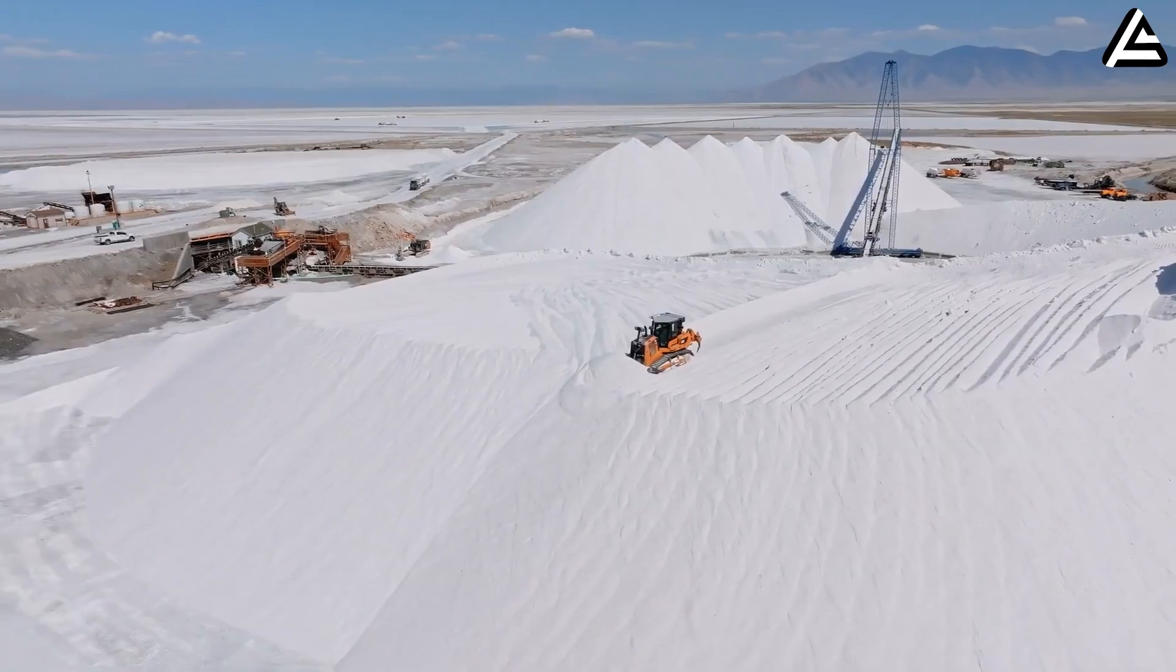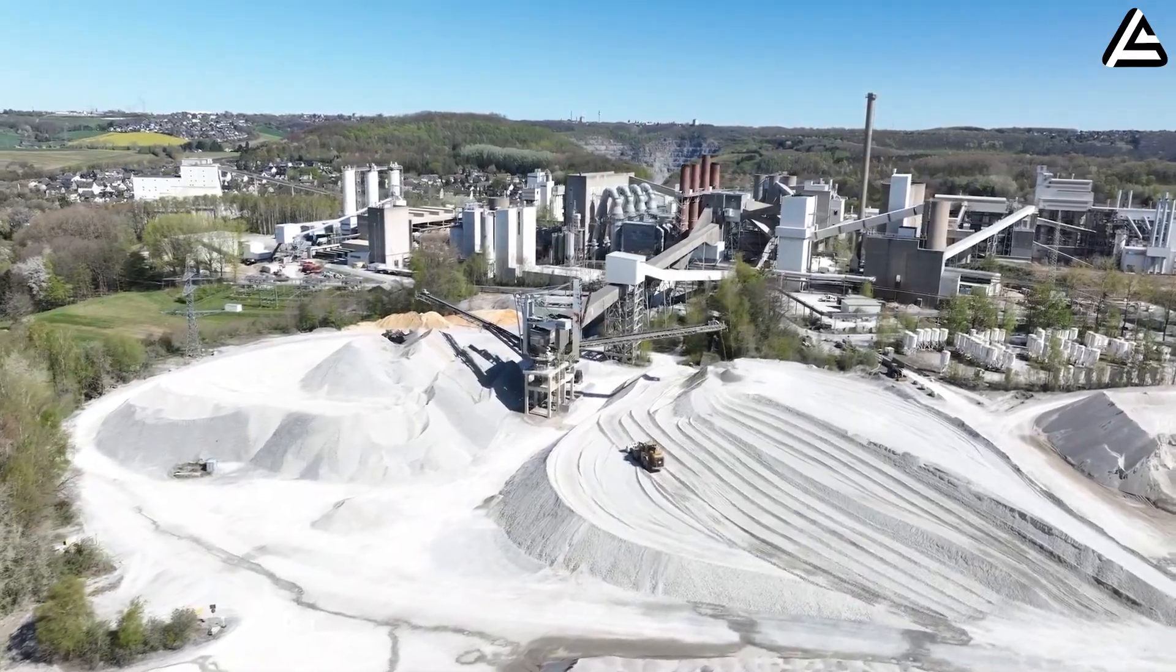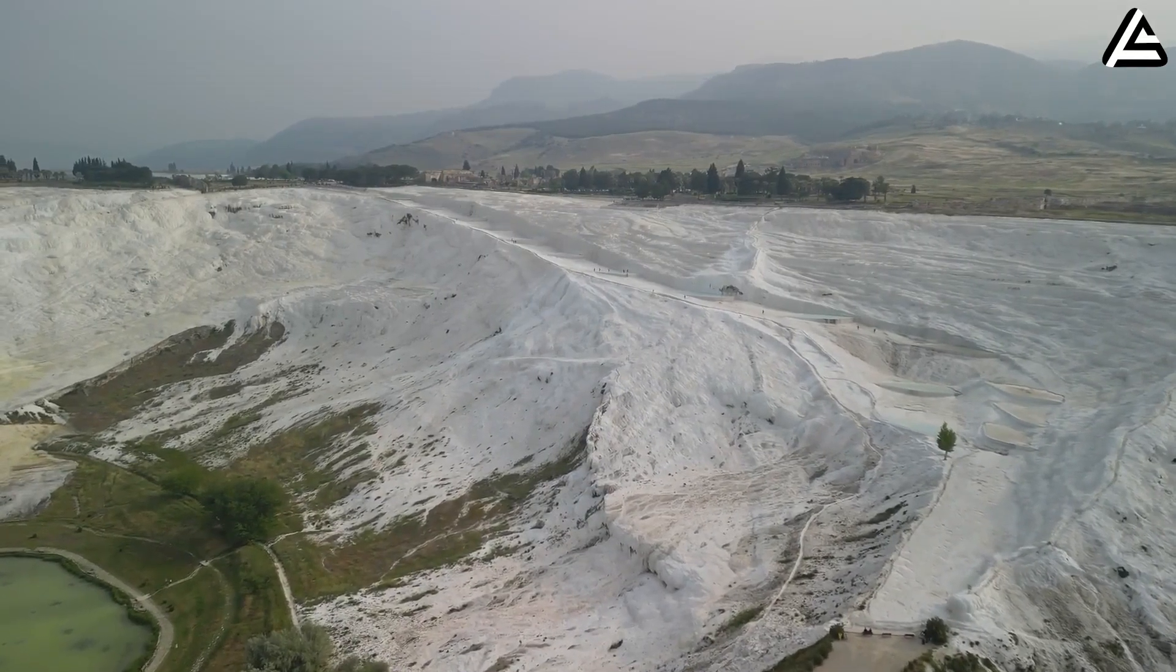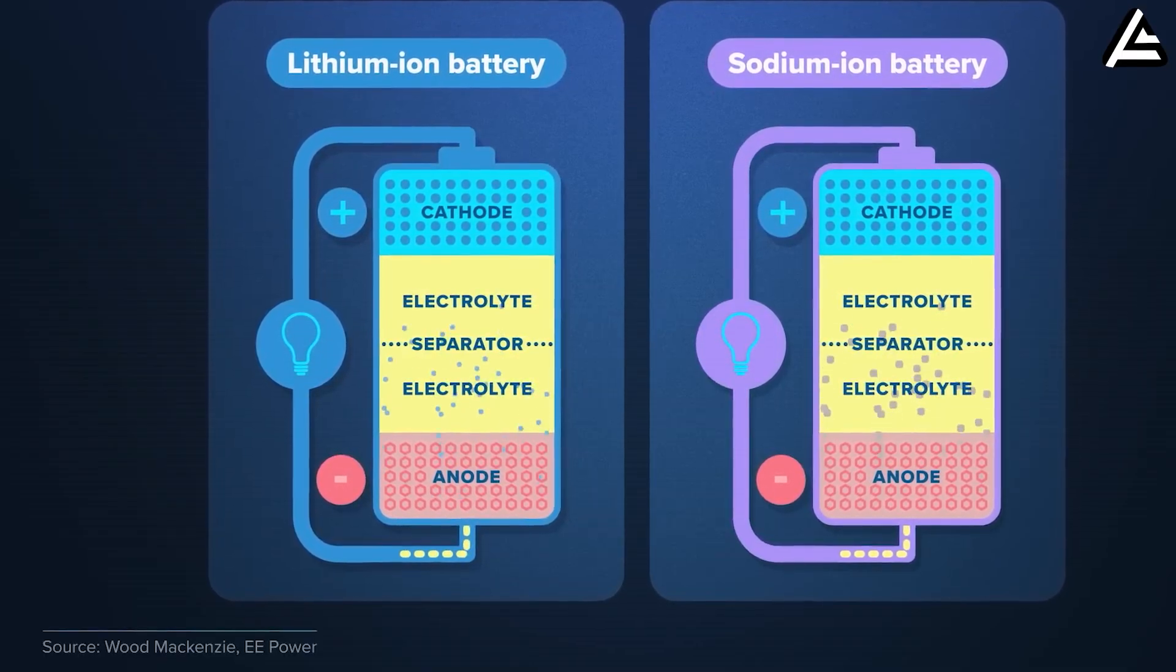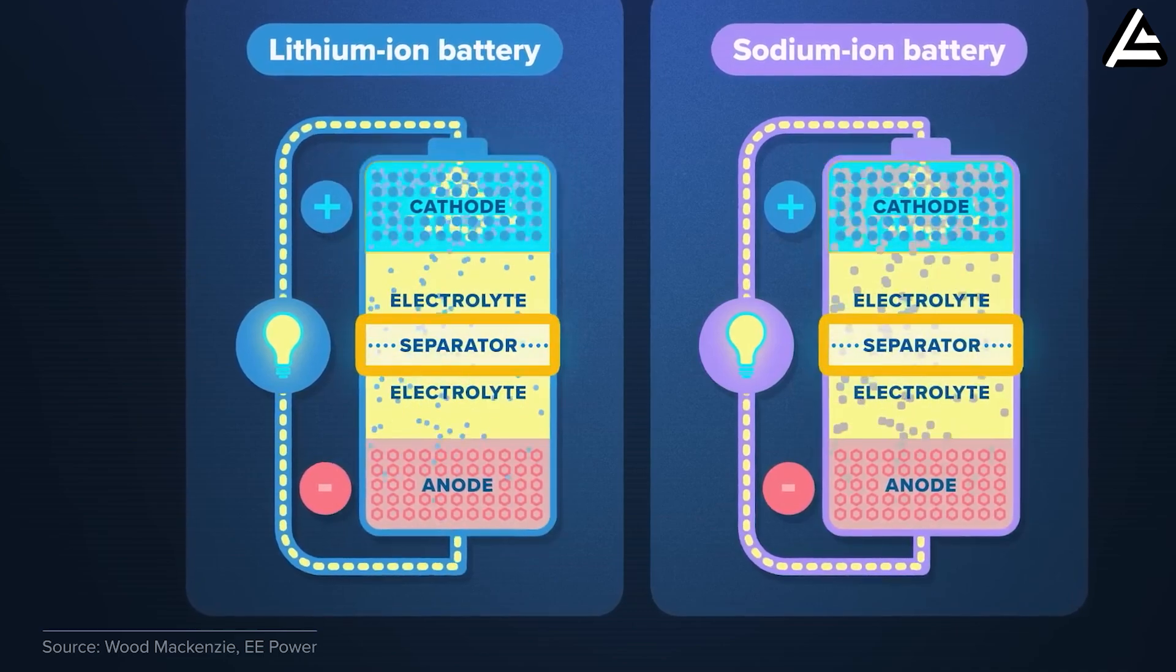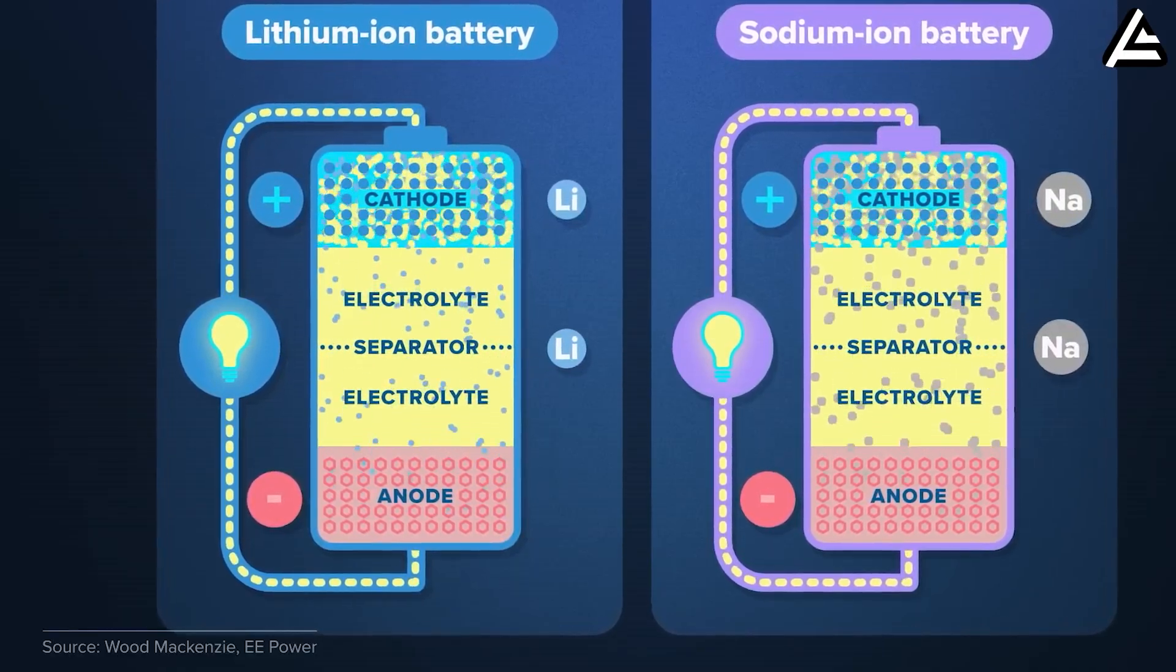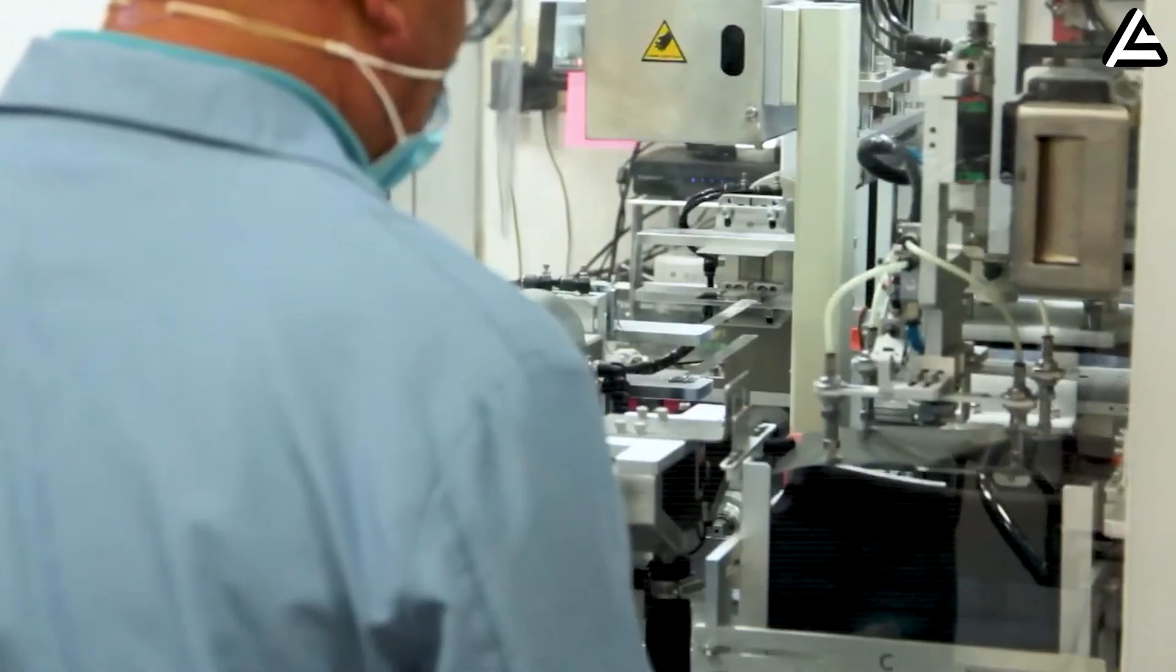However, sodium has three major advantages: cost, availability, and safety. Sodium carbonate costs roughly $150 to $200 per metric ton, while lithium carbonate has fluctuated between $10,000 and $70,000 per metric ton over the past few years. That price stability matters for mass production. When sodium-ion chemistry is paired with solid-state electrolytes, several problems improve at once. Sodium ions move more easily through certain ceramic and polymer solid electrolytes than lithium ions do. This reduces interface resistance and lowers degradation over time. From a manufacturing perspective, sodium-based solid-state cells can often be produced using modified versions of existing lithium-ion equipment.